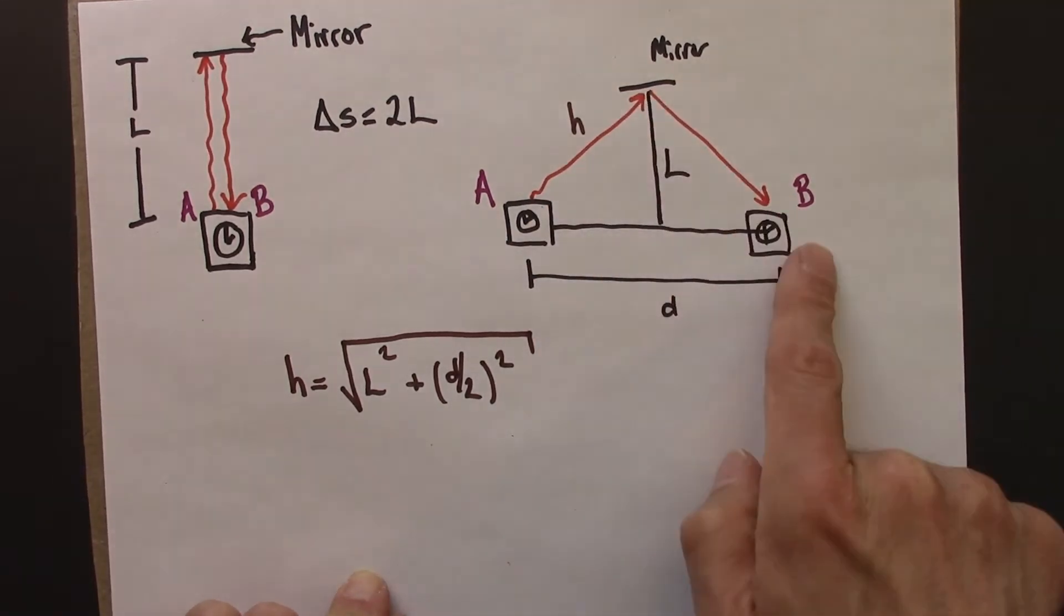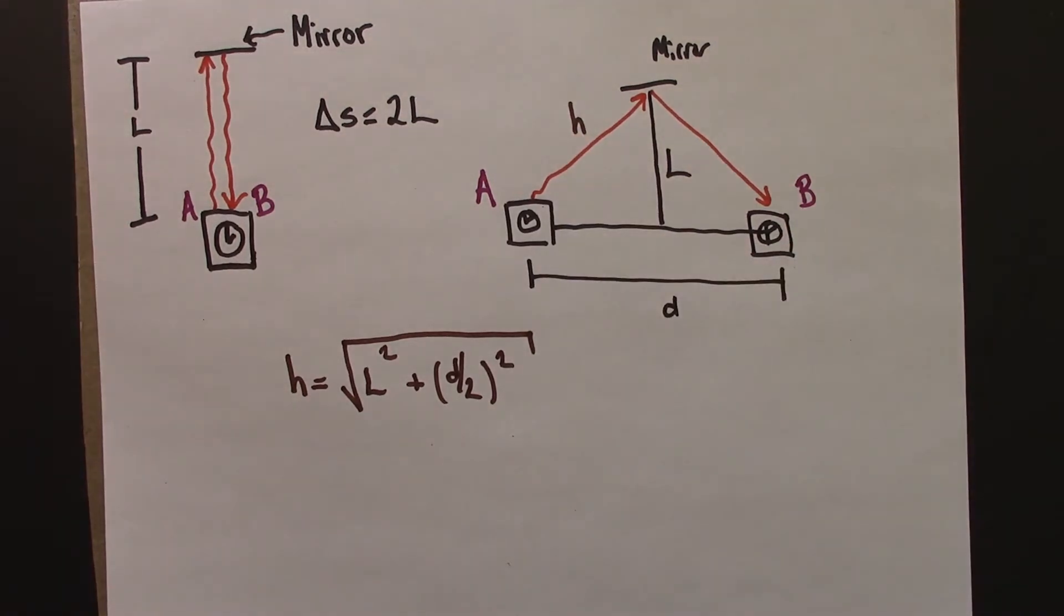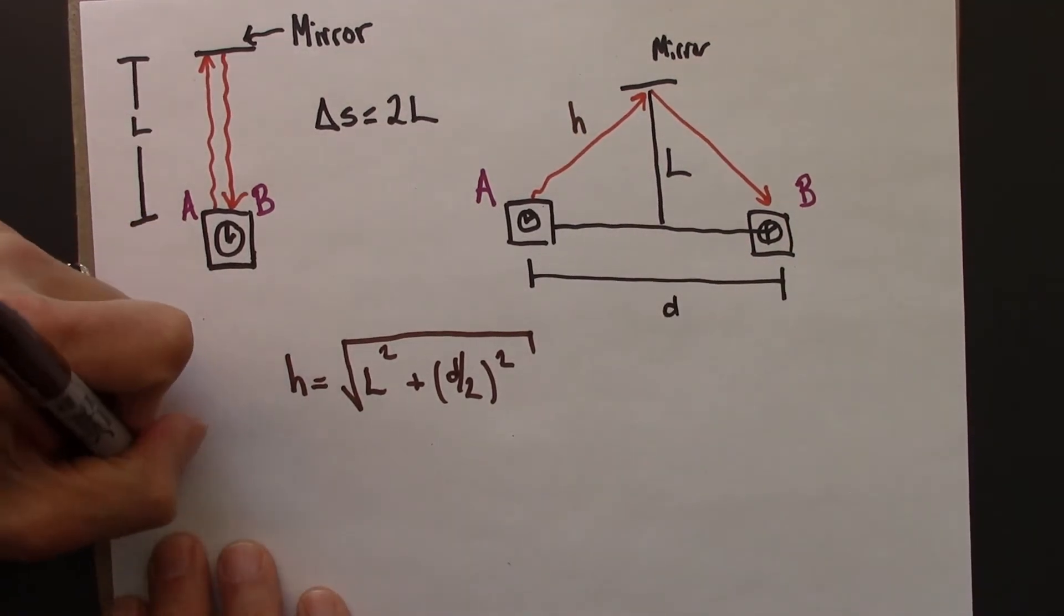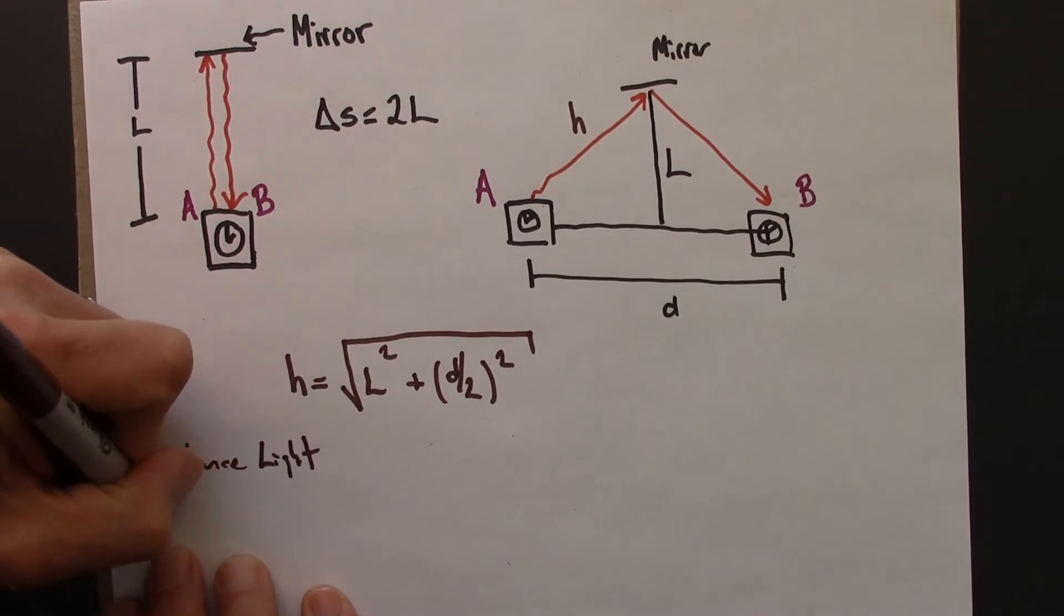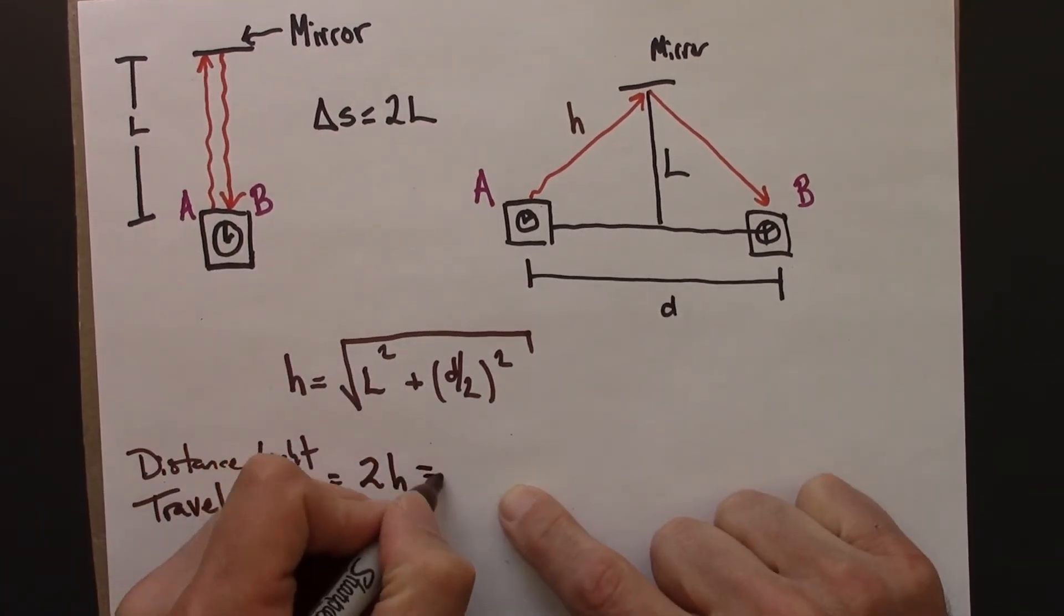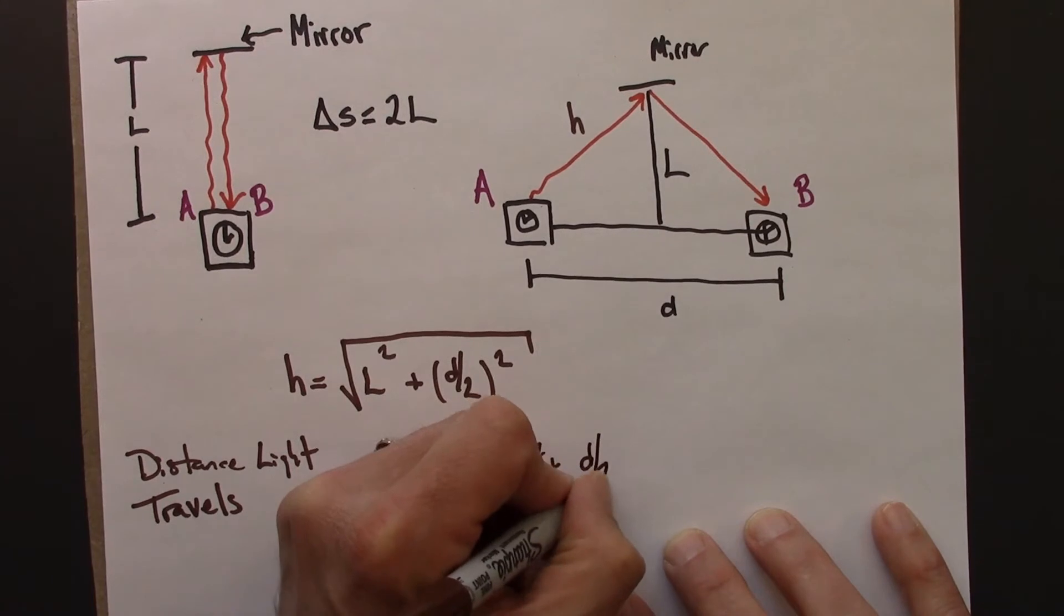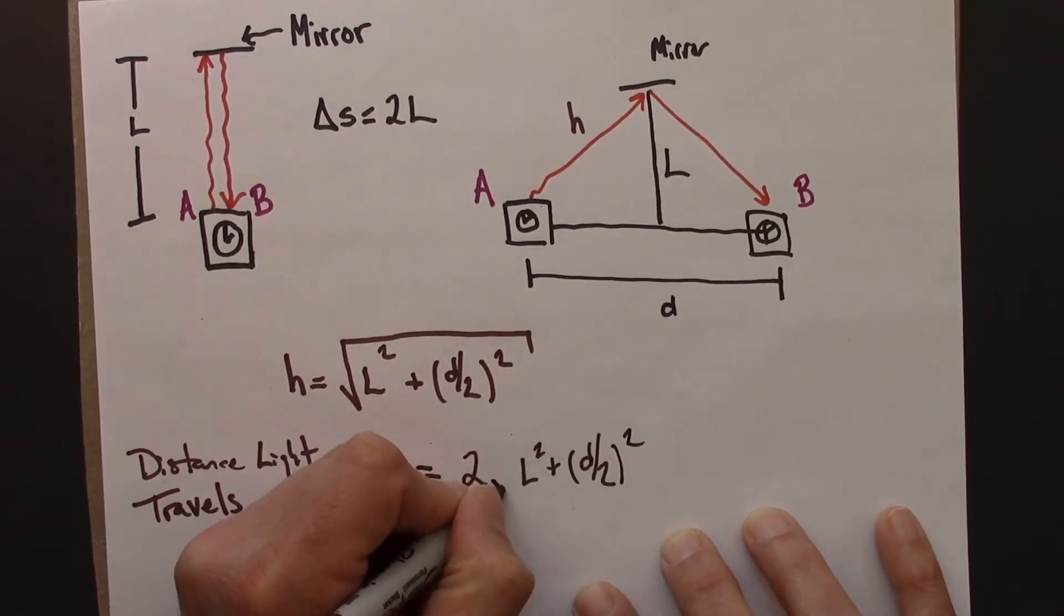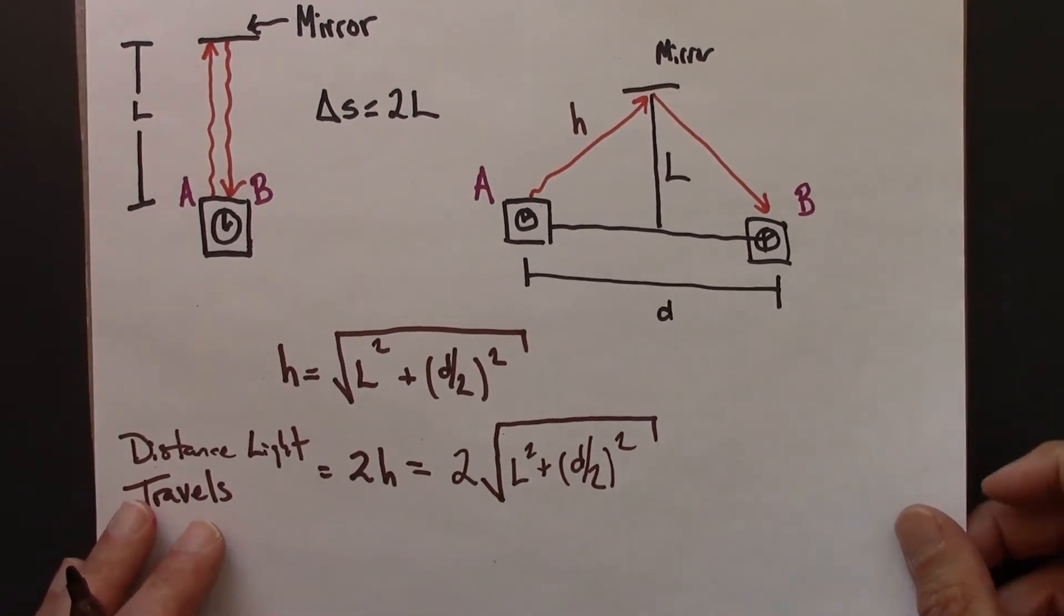The light travels not just H, but 2H. So let's do a little bit of algebra to come up with an expression for 2H. Distance light travels, that's 2H, and that's going to be just 2 times this square root thing: L squared plus D over 2 squared square root. So I want to do a little bit of algebra to put this into a more convenient form, a form that I can do something with.